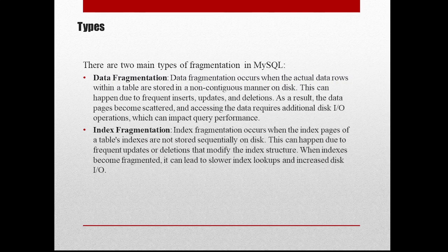The other type is index fragmentation. Index fragmentation occurs when the index pages of a table's indexes are not stored sequentially on the disk. If you have a primary key, composite key, or any unique key, data will be stored on data pages in the sequence of that index key. But if there is no primary key, or due to updates and deletes, indexes are not in proper order — for example, some rows were deleted but indexes are still pointing to older things.